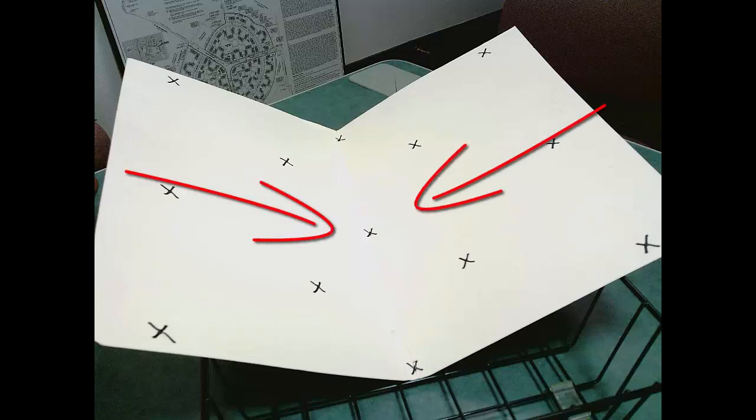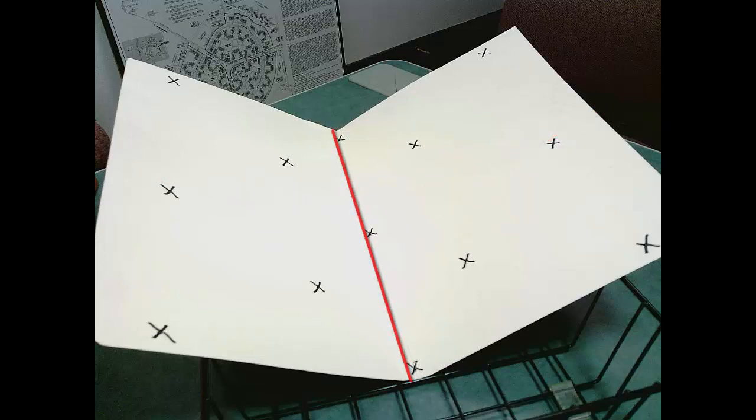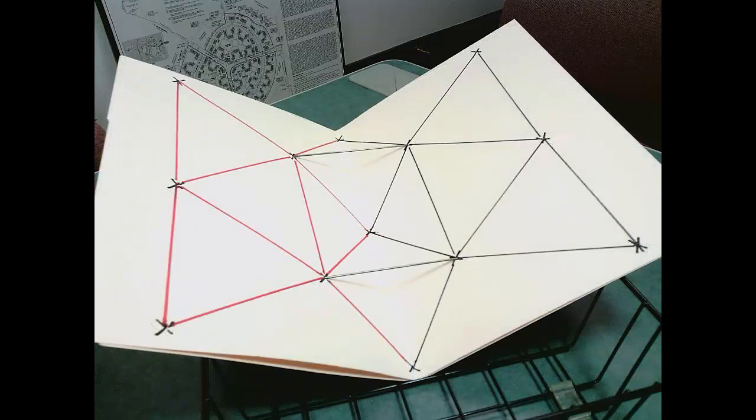The two halves have a different slope and they meet at the waterway, which is the crease. Using our plotted points, we start to draw our triangles. For clarity on our paper model here,